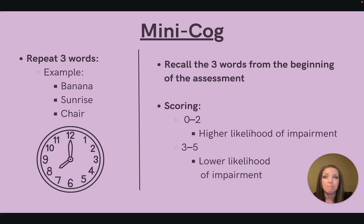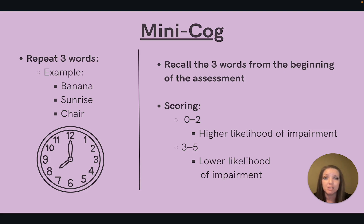Let's start off with the mini-COG. This is a very short and simple three-step exam that can be completed in a matter of minutes. The first part assesses word registration by asking the patient to remember and repeat three different words after the clinician. The second part assesses executive function by asking the patient to draw a clock in a circle with a specific time. For the third part, the patient is asked to again repeat the three words from the beginning of the assessment. Typically, a total score of 0 to 2 indicates higher likelihood of cognitive impairment, while a score of 3 to 5 indicates lower likelihood of cognitive impairment.